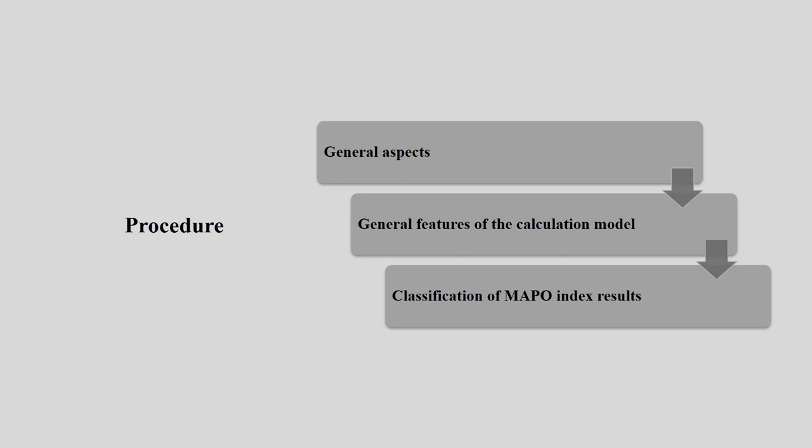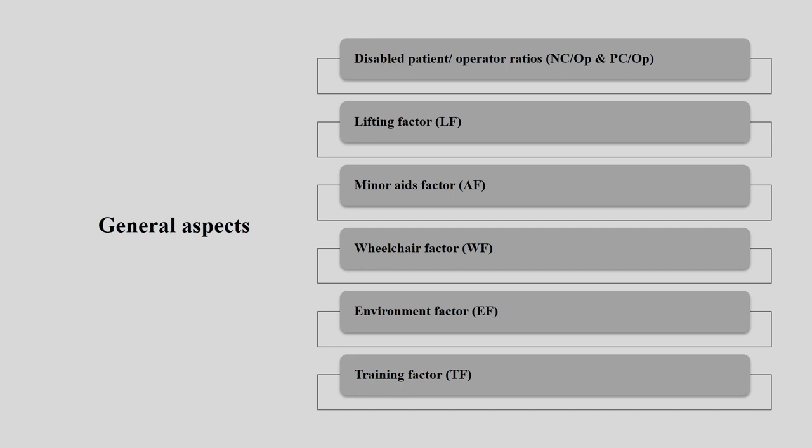You need to identify the general aspects and general features of the calculation model. It has a typical calculation process because we are talking about an index. You need to calculate it, and once you get the index, you have to go for the classification of the index. We will go through each step in detail. When talking about the general aspect, we need to understand that there are varieties of factors involved.